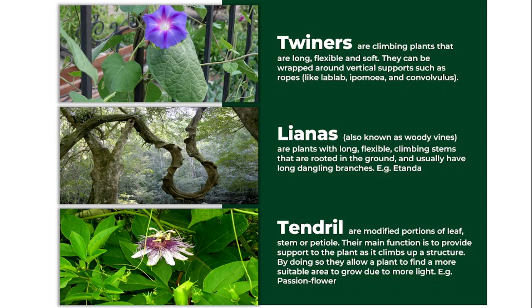Lastly, we have the tendrils. The tendril kind of stem is found in plants that possess special structures, which are modifications from either the stem or the leaves. They use these structures to aid themselves in attaching to any objects they intend to climb. Plants in this category include the passion flower.